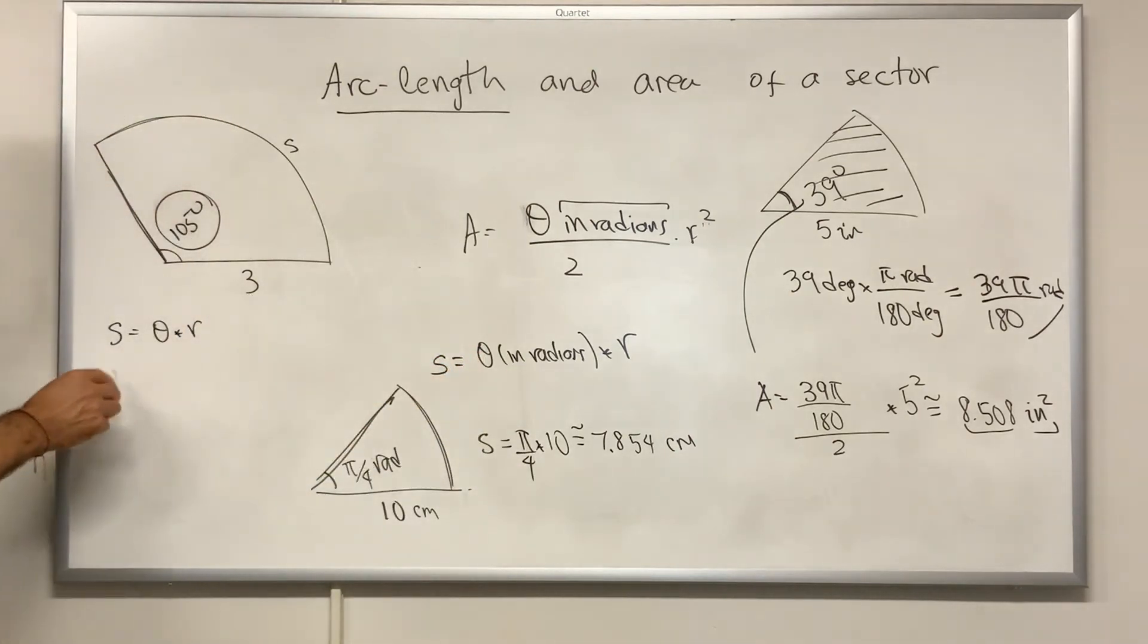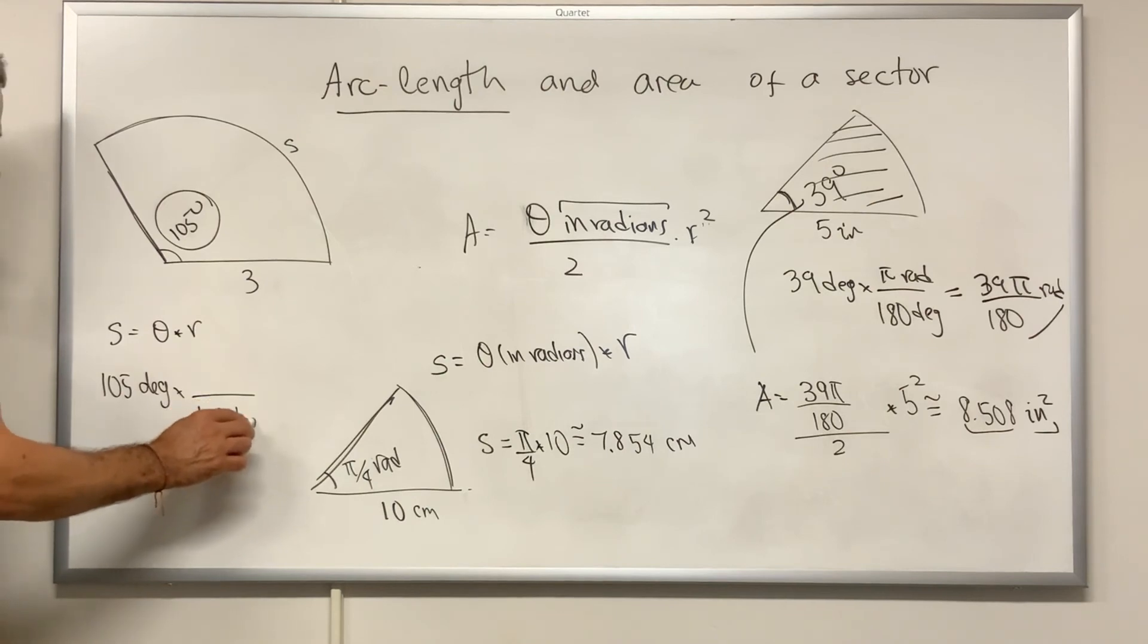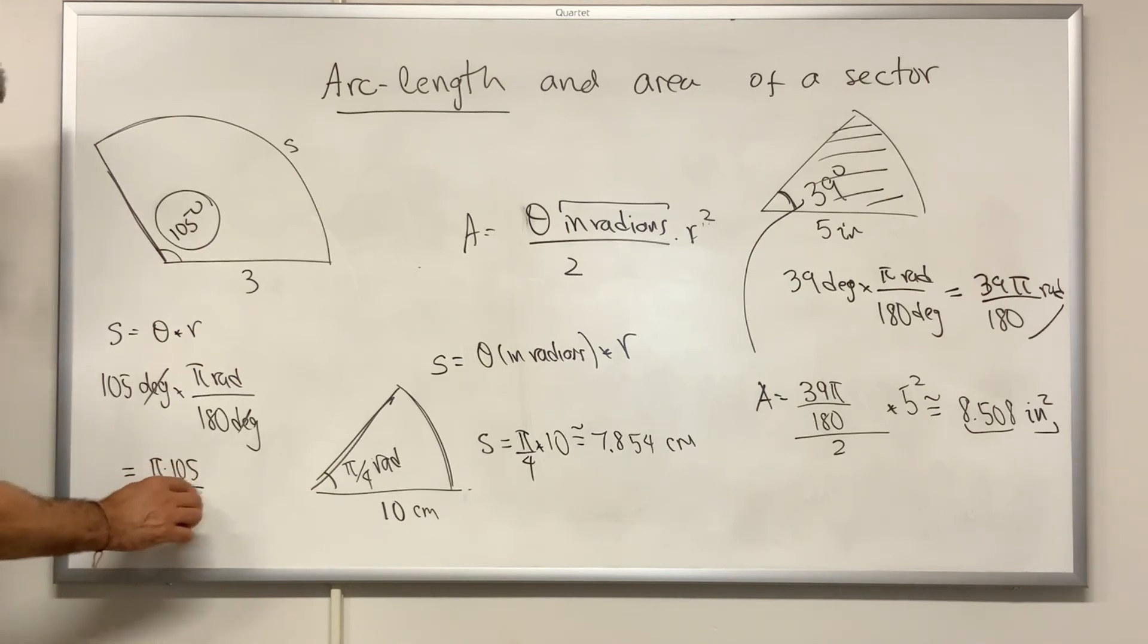The angle must be in radians and we have that 105 degrees. Let's change it to radians. Then we know that 180 degrees is the same as π radians. In this case, the degrees cancel out and we get that this angle is π times 105 over 180.